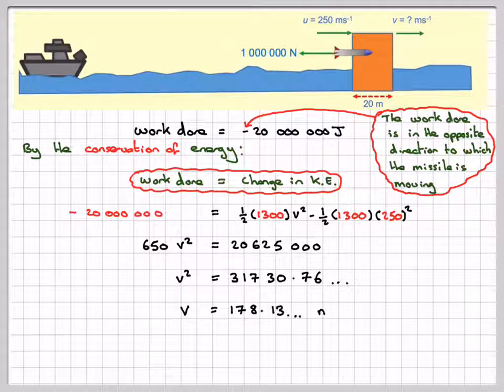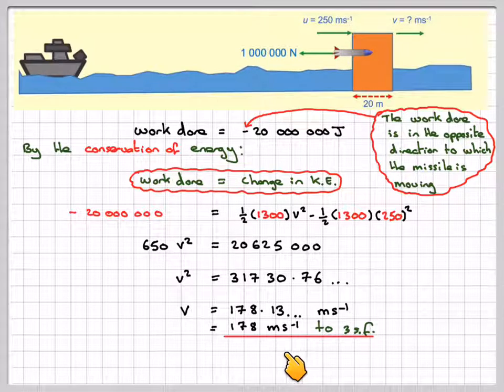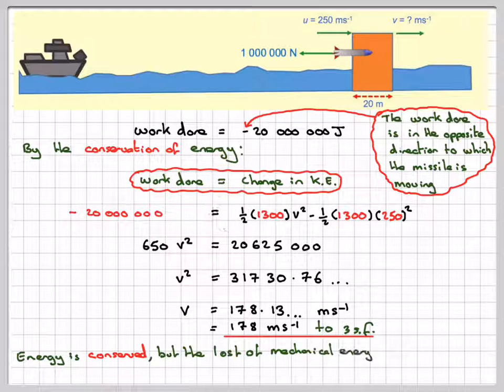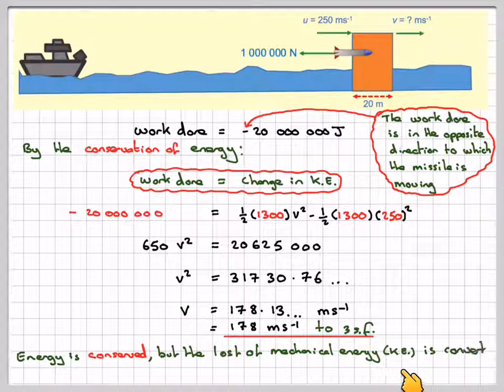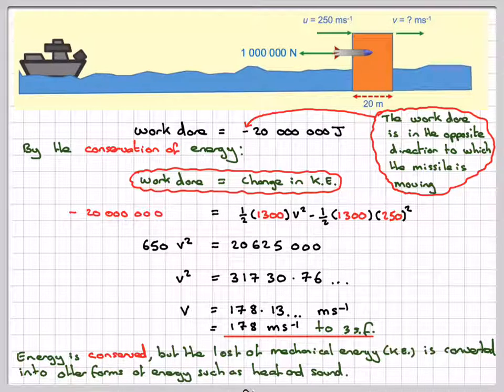Taking the square root, v equals 178.13 meters per second. Therefore, v equals 178 meters per second to three significant figures. The energy is conserved, but the loss of mechanical kinetic energy is because it's converted into other forms of energy such as heat and sound.